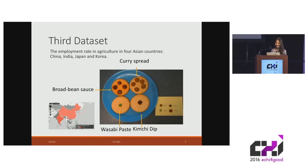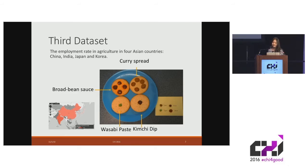The third data set is the employment rate of agriculture in four Asian countries. We employed typical sauces from each country, including broad bean sauce from China, curry spread, wasabi paste, and kimchi dip. Participants enjoyed guessing the countries without looking at the descriptions of the data edibilization.